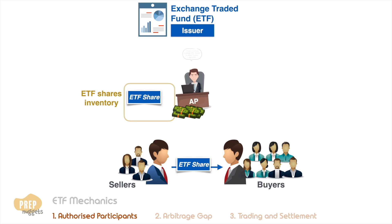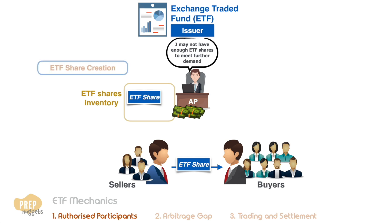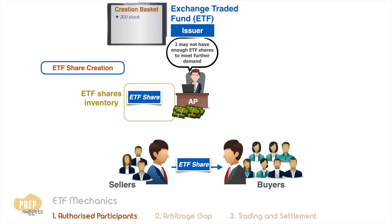If the AP anticipates higher demand and the existing inventory of ETF shares may not meet that demand, the AP will seek the creation of new shares from the ETF manager. Each ETF manager will publish a list of underlying securities for the creation of ETF shares, known as the creation basket. The ETF issuer will also specify the minimum lot size known as the creation unit — for example, 50,000 ETF shares for a specified number of underlying securities.